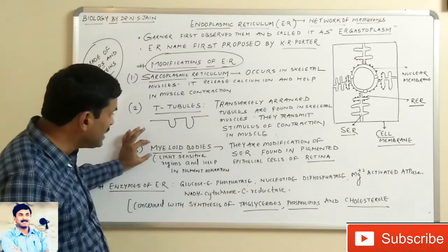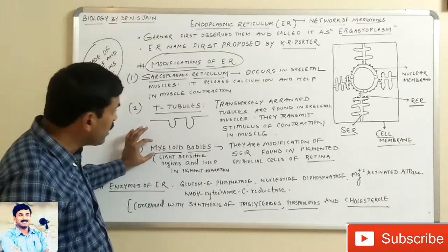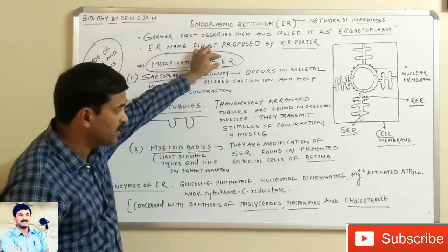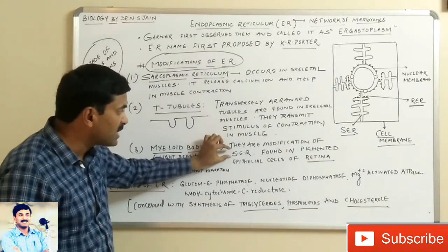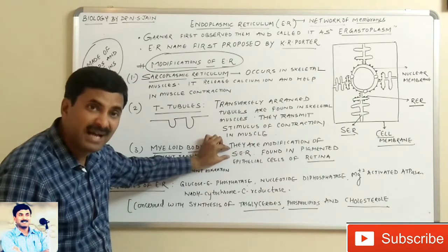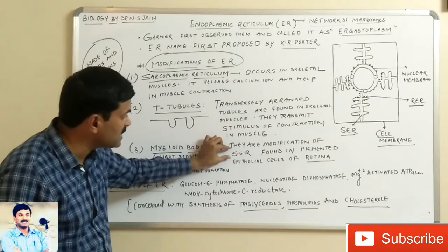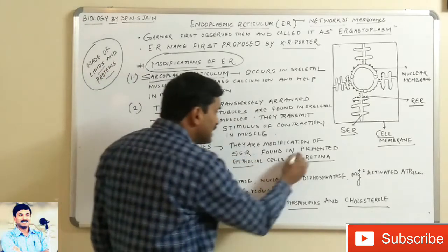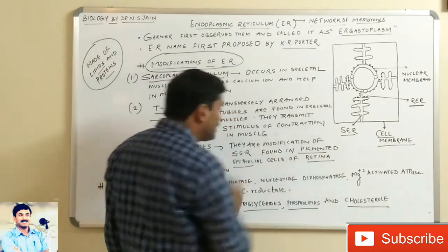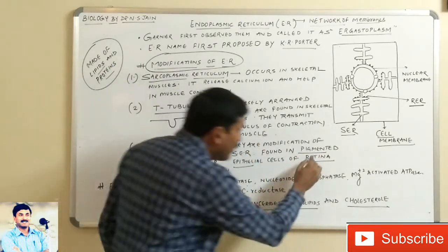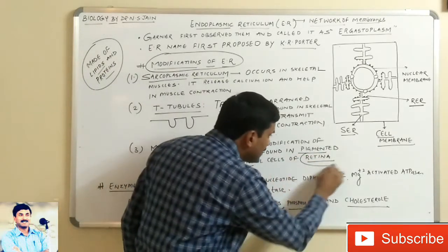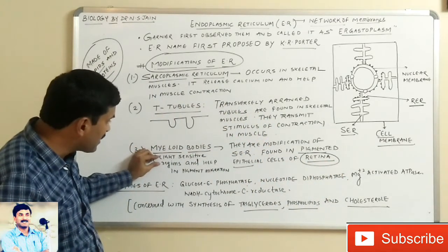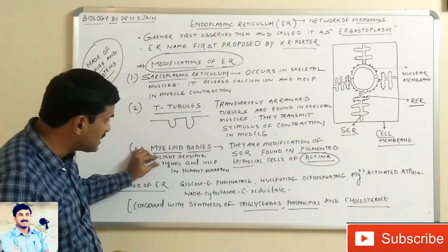There are also myelinoid bodies, which are modifications of the endoplasmic reticulum, specifically the smooth endoplasmic reticulum. They are pigmented epithelial cells found in the retina of the eye. They are light-sensitive regions and help in pigment migration.